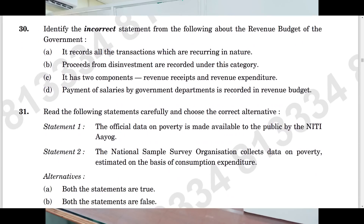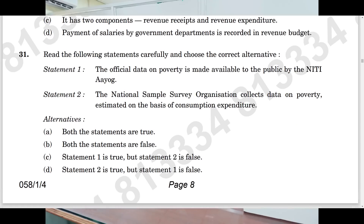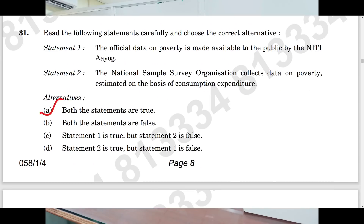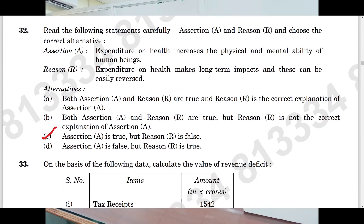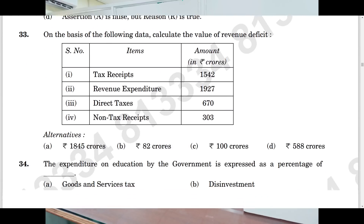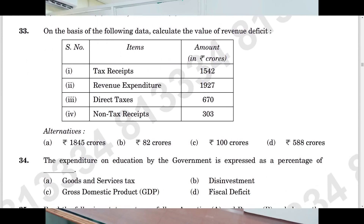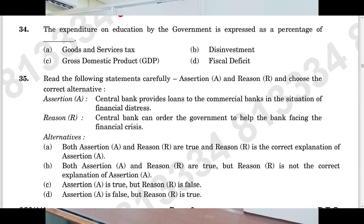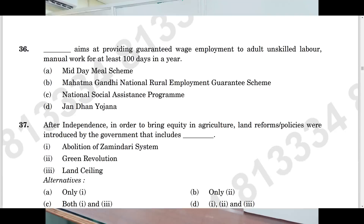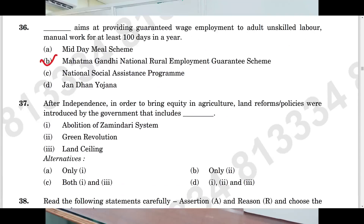Question number thirty: option B. Question number thirty-one: option A. Question number thirty-two: C. Question number thirty-three: B. Question number thirty-four: C. Question number thirty-five: also C. Question number thirty-six: B. Question number thirty-seven: C.